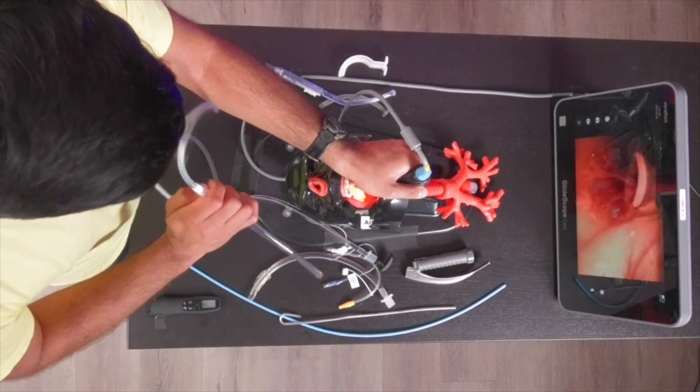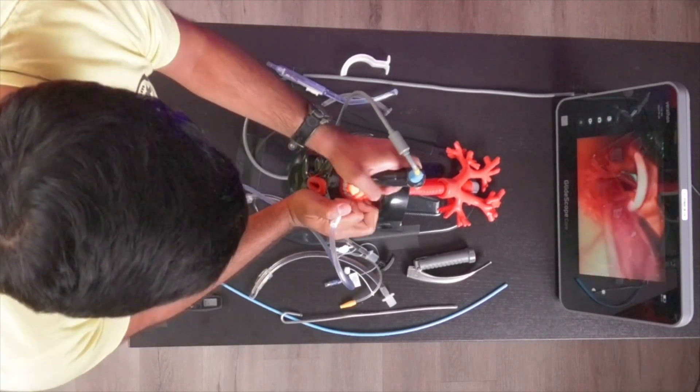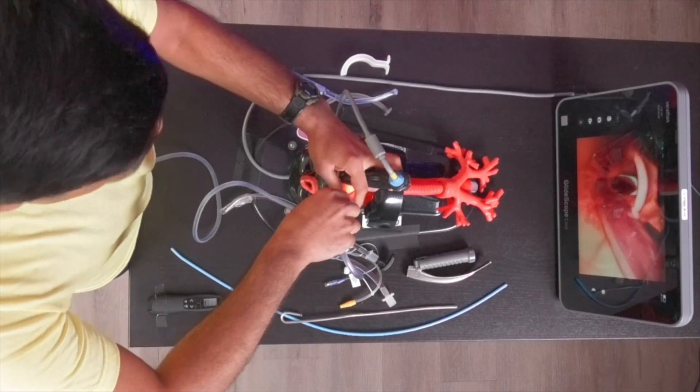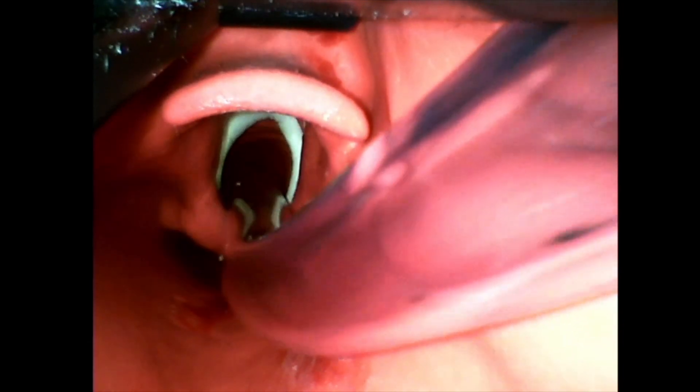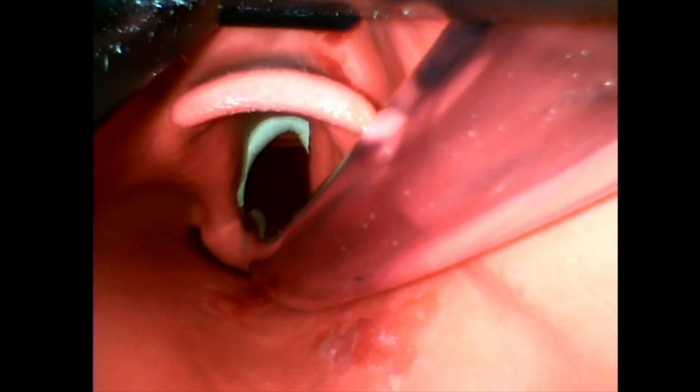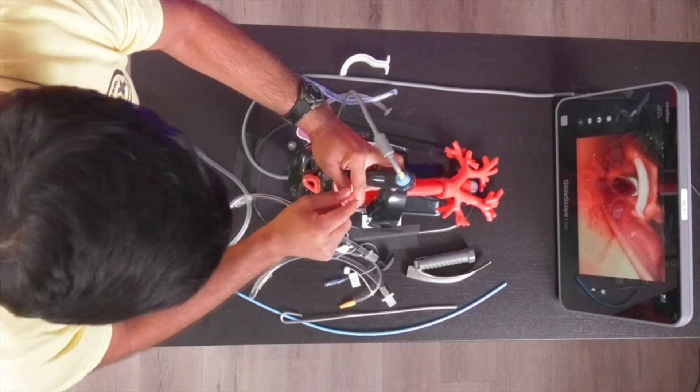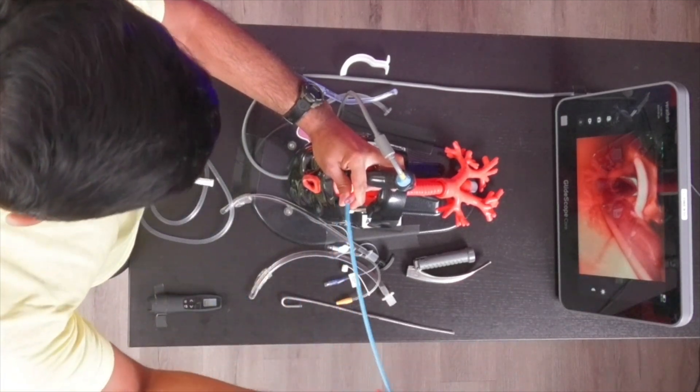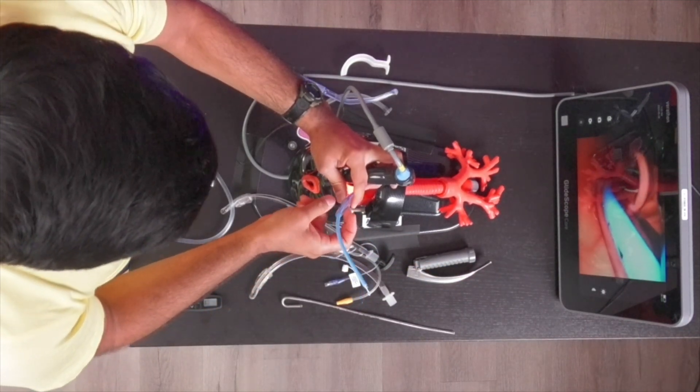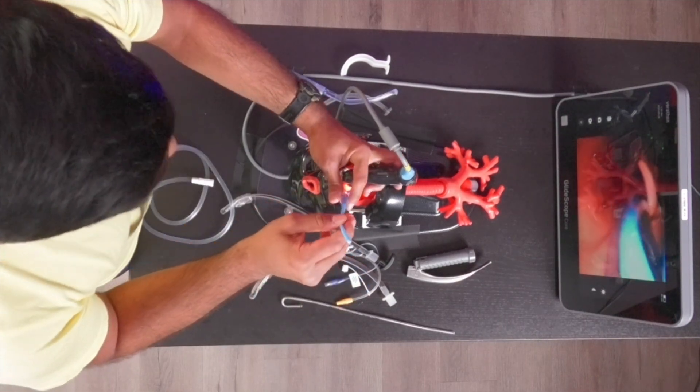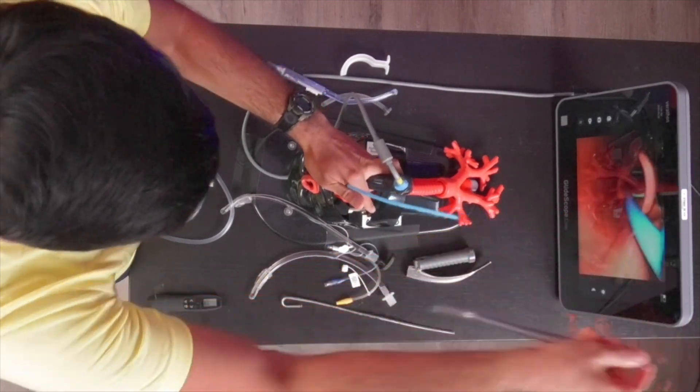The other option is to actually use your DuCanto catheter to place it into the airway. Ian, can we get the glidescope view real quick? What you'll see is I've placed the tip of my DuCanto catheter into the airway. Let's get the overheads now. I'm disconnecting the DuCanto suction catheter from the suction tubing, and I can pass a bougie through this. The diameter is such that a standard bougie will fit through here. Now, using this rigid catheter, you've intubated the airway and passed a bougie through.